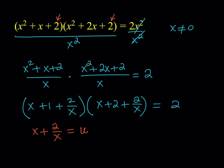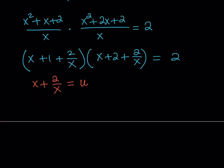So after calling the x plus 2 over x u, then we should be getting u plus 1 multiplied by u plus 2 is equal to 2. Awesome.